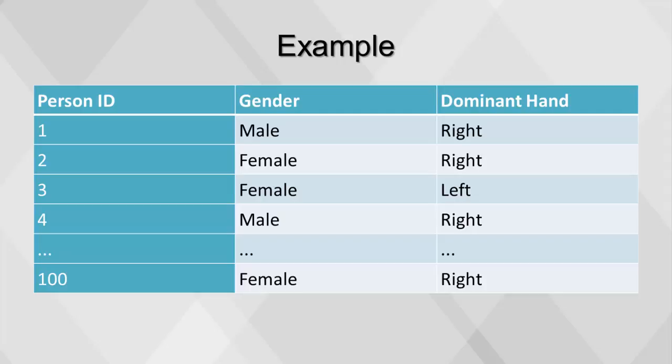In a table such as this, notice that there are no numerical values. The person ID is a numerical identifier, but the numbers are arbitrary, so there are no obvious calculations to perform. However, because each row represents one person, we can count the number of rows along each dimension, gender and dominant hand, to analyze how the dimensions are distributed.